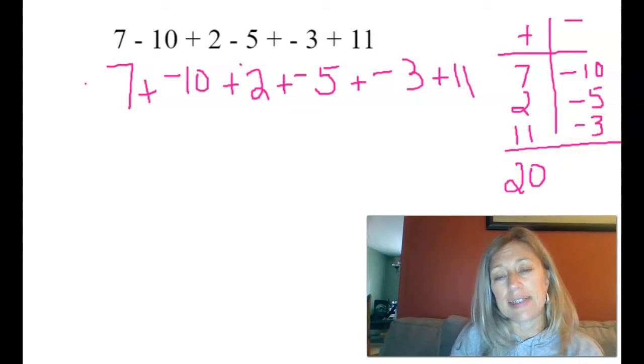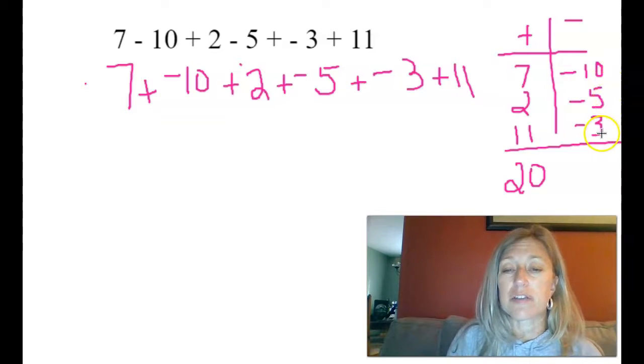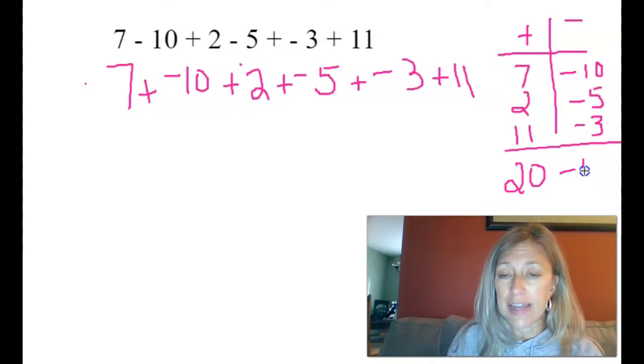Now, on this side, I have negative 10 and negative 5, so it's negative 15. Plus negative 3 is negative 18.